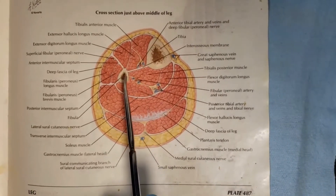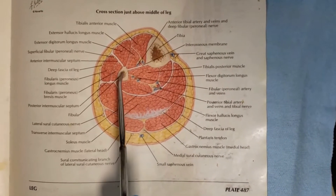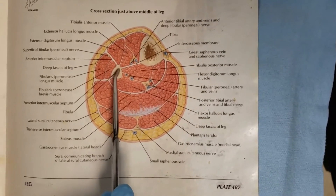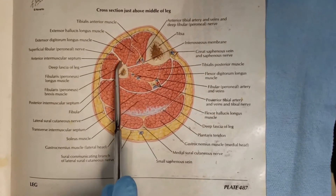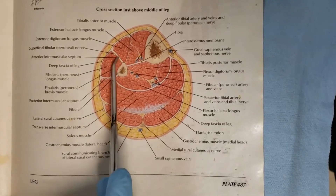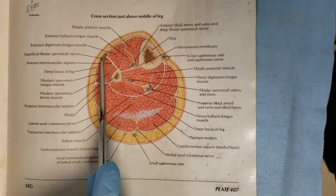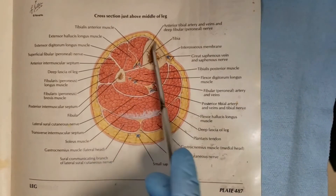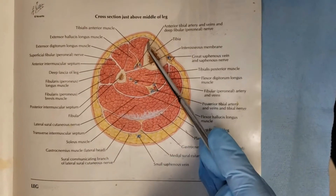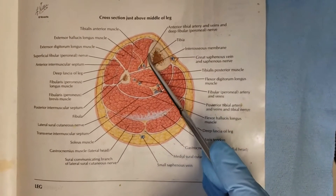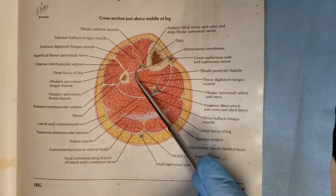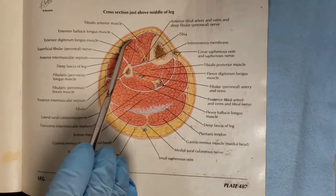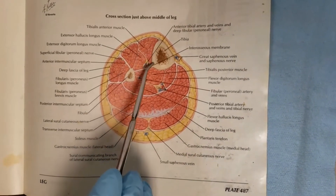The anterior compartment of the leg is outlined by the fibula, the anterior intermuscular septum, the crural fascia — which is the deep fascia of the leg — the lateral surface of the tibia, and the interosseous membrane. So that outlines the anterior compartment of the leg.